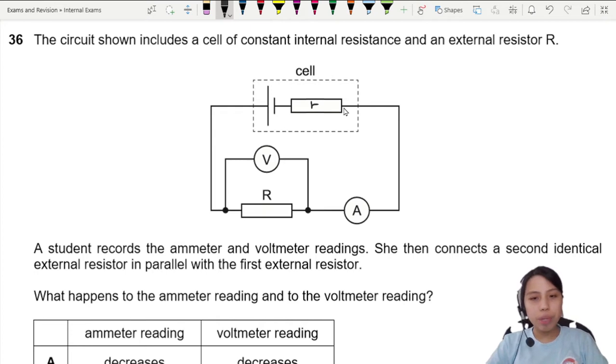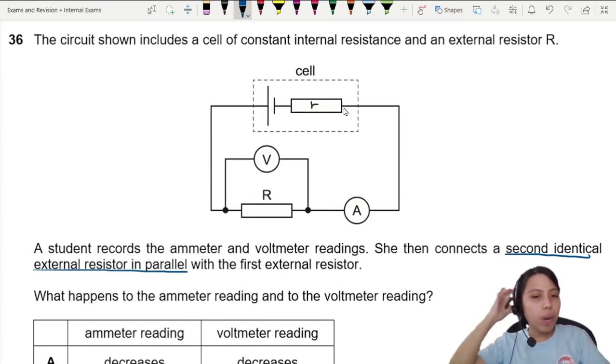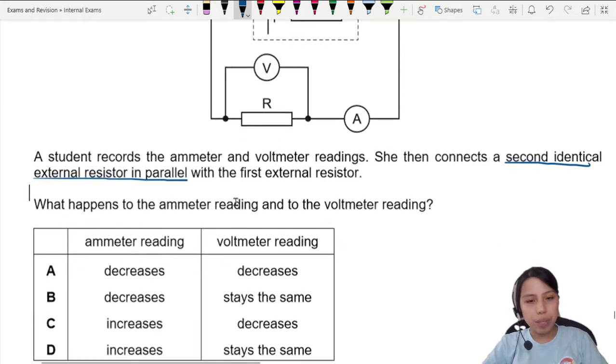A student records the ammeter and voltmeter readings, then connects a second identical external resistor in parallel with the first external resistor. What happens to the ammeter and voltmeter readings?